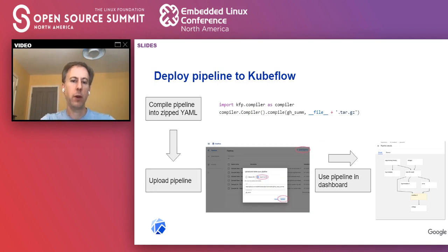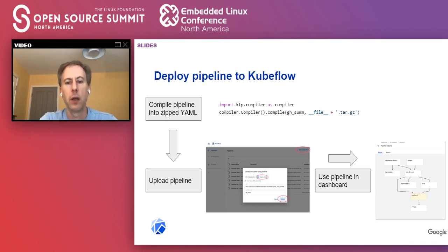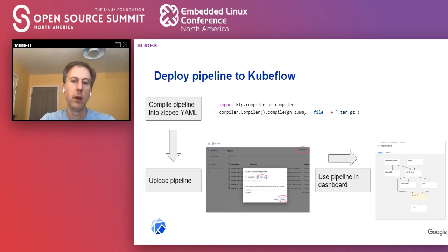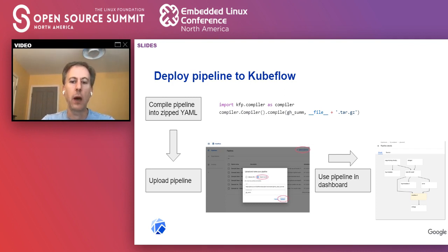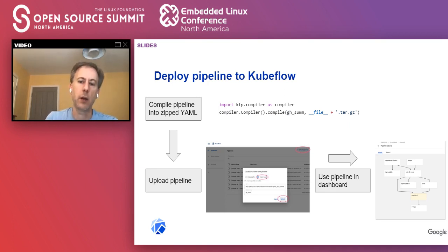Now you've created your pipeline — how do you deploy it? There is a package to compile your pipeline. It takes that Python code and turns it into a YAML file, then zips it up. From there, you can upload the pipeline programmatically or via the UI. Now it's accessible in the dashboard, and your team can use that pipeline. It's parameterized, so you can use that same pipeline in different contexts with different parameters.